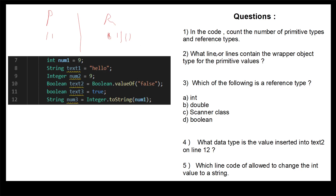Question two asks which lines contain wrapper objects. Line 8 is a reference type String but not a wrapper object. Line 9 is the Integer wrapper object — we're wrapping a primitive int into an Integer object. Line 10 wraps a boolean value into a Boolean object. Line 12 uses the Integer wrapper's toString method to convert the integer to a String. So lines 9, 10, and 12 are the answers.